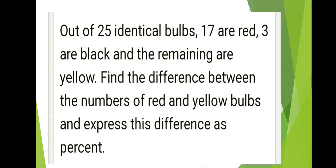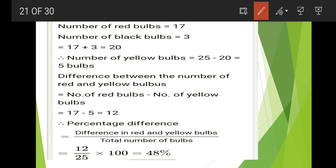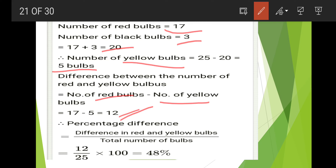Next: out of 25 identical bulbs, 17 are red, 3 are black, and the remaining are yellow. Find the difference between the numbers of red and yellow bulbs and express this as a percentage. Number of red bulbs is 17, black is 3, so total red and black is 20. Yellow bulbs is 25 minus 20 equals 5. Difference between red and yellow is 17 minus 5 equals 12. Percentage difference is 12 by 25 into 100 equals 48 percent.